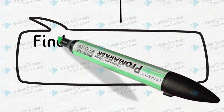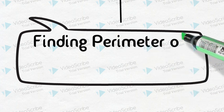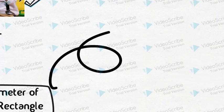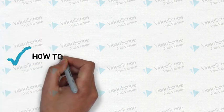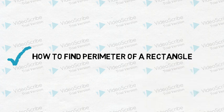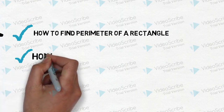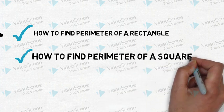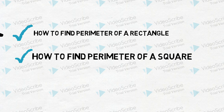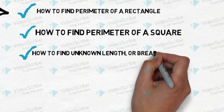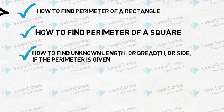In this video, we are going to learn specifically about finding the perimeter of square and rectangle. This video is provided for primary form. Specifically, you are going to learn: how to find the perimeter of a rectangle when the length and breadth are already given; how to find the perimeter of a square when the side is already given; and how to find the unknown length, breadth, or side if the perimeter is already given.